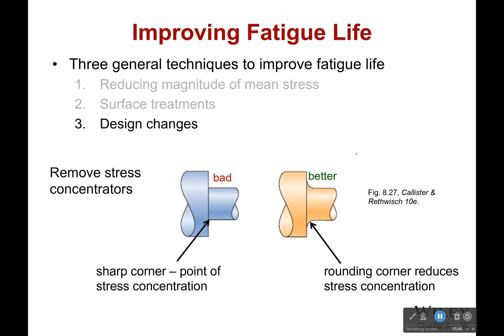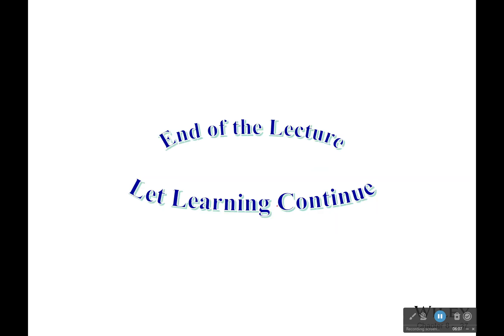The third method is design changes — get rid of stress concentrators. Things with nice curves are good; sharp edges are bad. Sharp edges are not going to help us. By eliminating those stress concentrators, we can improve fatigue life.